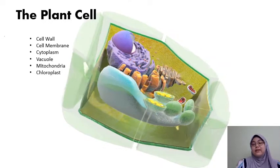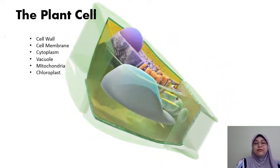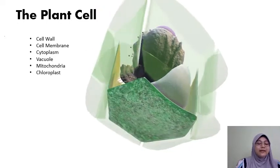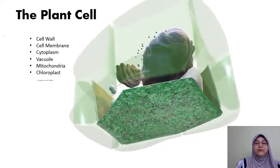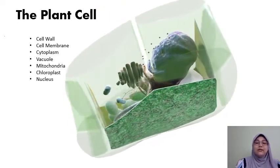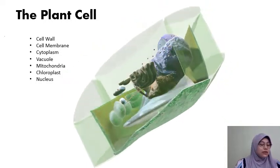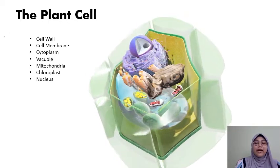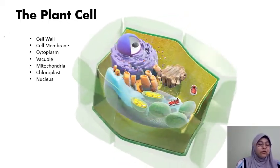Next we have the chloroplast. The chloroplast is the site for photosynthesis. You would have the chlorophyll and the enzymes to carry out the photosynthesis. Next we have the nucleus. The nucleus is where the DNA or the hereditary component of the cell would be stored.